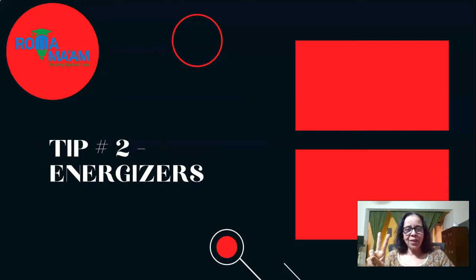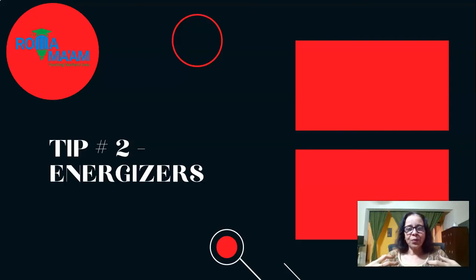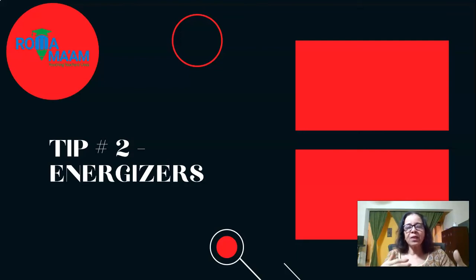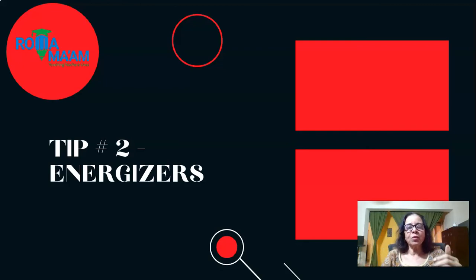Tip number two is energizers. Where do we get our energy from? Think about it. How do you generate energy in your body? Just the way you do it, you can create energizers for your class and see that you energize your students at regular intervals so that they don't get bored in your class and they are all ears, all eyes, and all brains with you for those 40 or 45 minutes that you teach them.